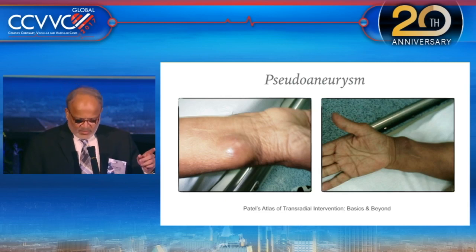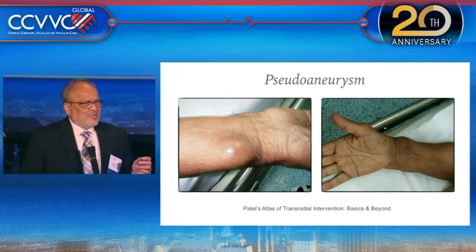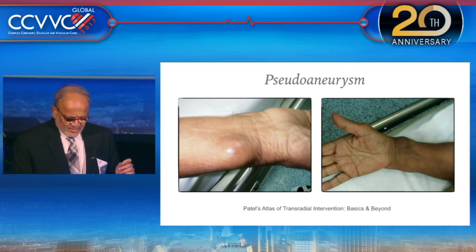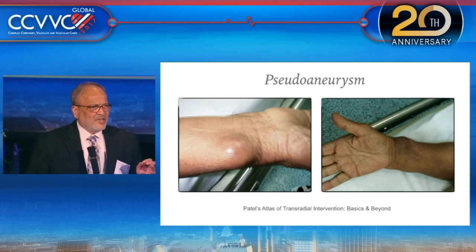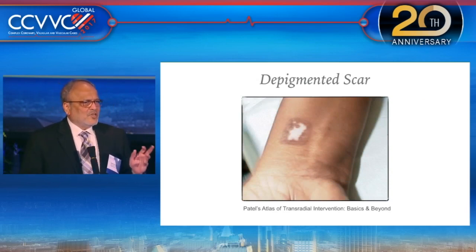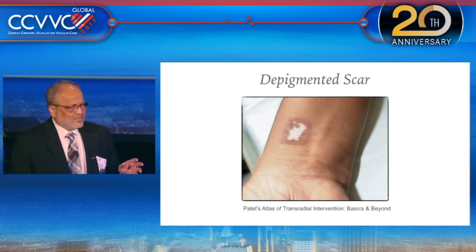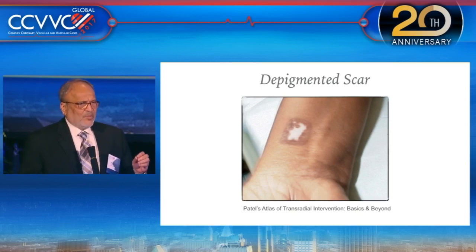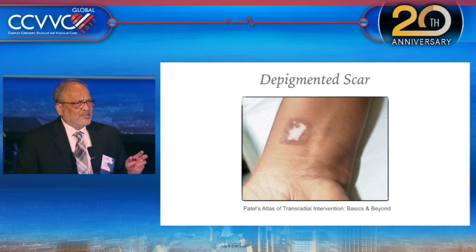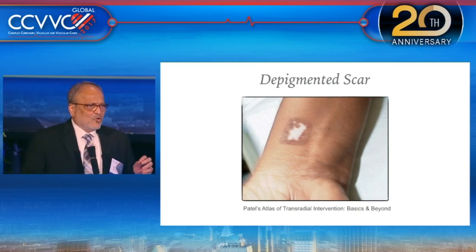A pseudo-aneurysm which is very lateral can be dealt with by a small surgery on an outpatient basis; the surgeon can do it and the patient can be discharged in a couple of hours. Depigmented scar is also not a problem now if you are practicing the proper hemostasis technique, as it occurs because of inadvertent pressure over the radial.